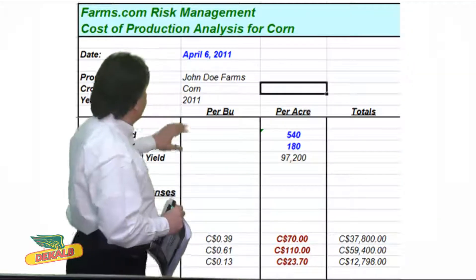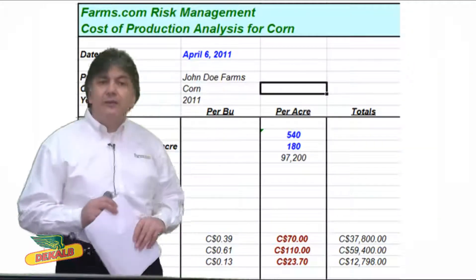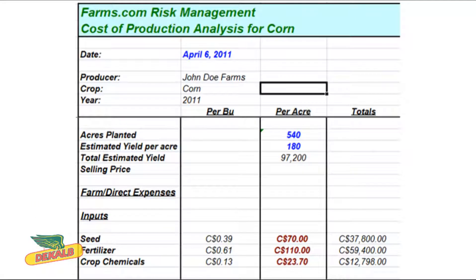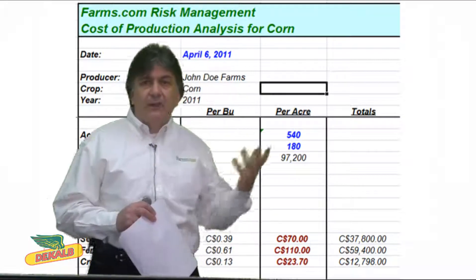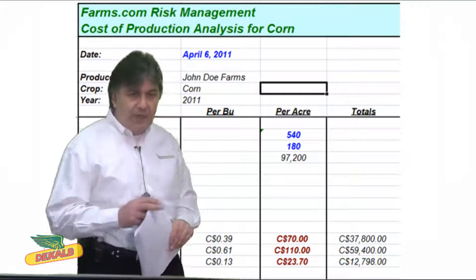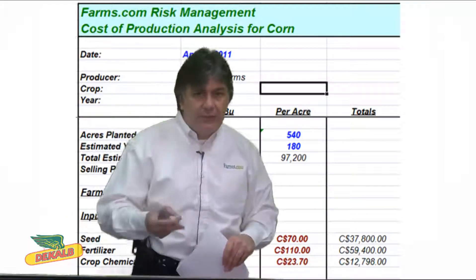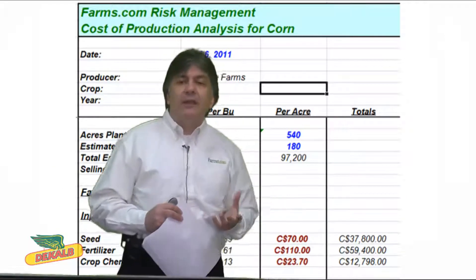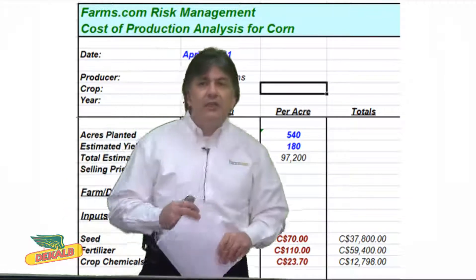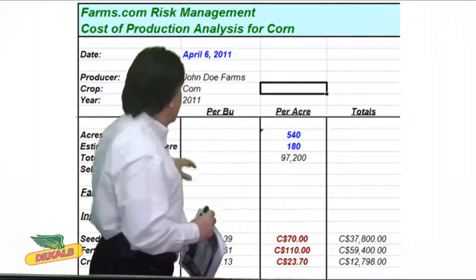Let's go through an example here. This is a tool we've created here at farms.com risk management. I'm using John Doe Farms, dated April 6th, 2011. This is a good example of today's corn producer who needs to figure out what the cost of production is, because with prices around $6.45 to $6.50 per bushel off December, can he actually make money at these prices? Historically, you can — but let's go through that example.